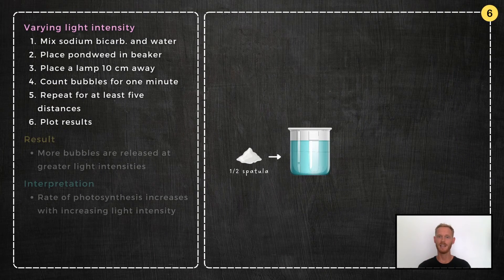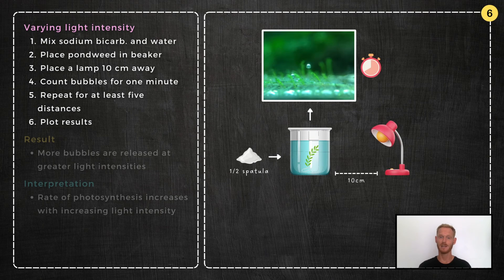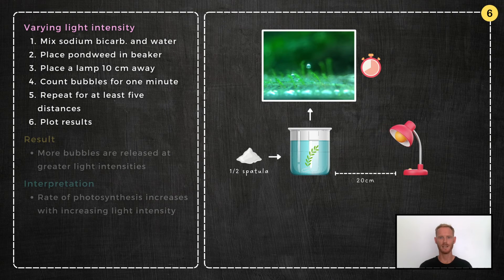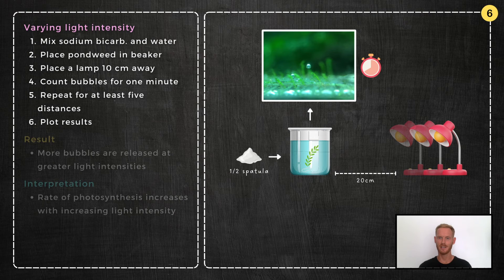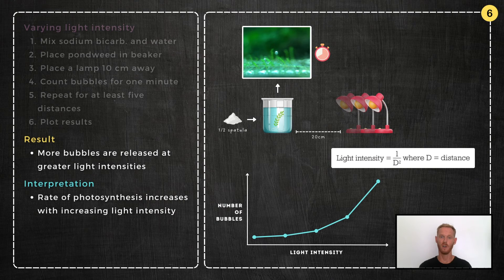Experiment 6: Investigate the effects of varying light intensity on the rate of photosynthesis. Mix sodium bicarbonate in a beaker of water to saturate the water with carbon dioxide. Take a piece of pondweed, attach a paperclip to stop it floating, and place it in the beaker. Place a lamp 10 centimetres away and count the number of bubbles released by the plant in one minute. Then move the lamp 20 centimetres away, allow it to adjust, and count the bubbles again. Repeat for at least five distances, calculate light intensity at each distance using the relevant equation, and plot your results on a graph. More bubbles are released per minute at greater light intensities, due to an increase in the rate of photosynthesis.